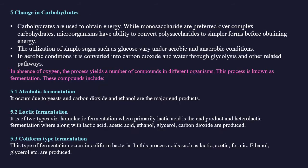Carbohydrates are the primary source of carbon and energy. Monosaccharides are preferred over complex carbohydrates; microorganisms convert polysaccharides like starch into simpler forms such as glucose before obtaining energy. In aerobic conditions, simple sugars like glucose are converted into carbon dioxide and water through glycolysis and related pathways. In anaerobic conditions, the process yields various compounds in different organisms — this process is known as fermentation.